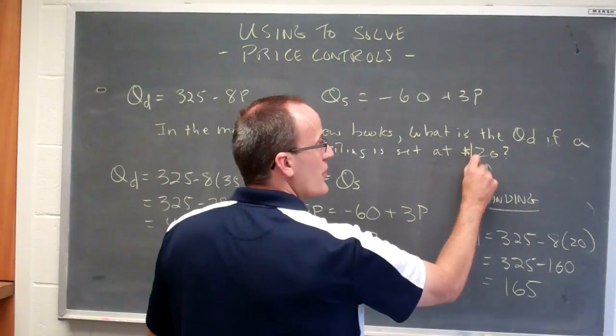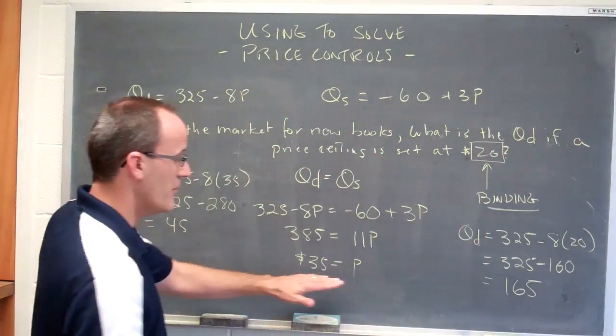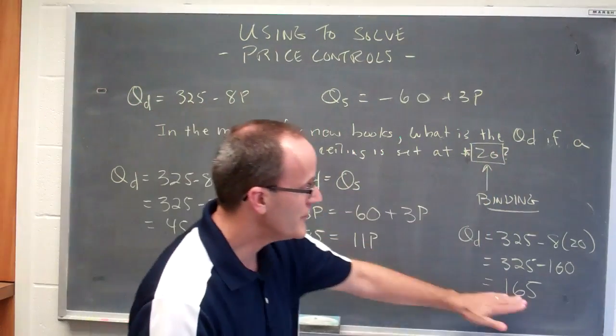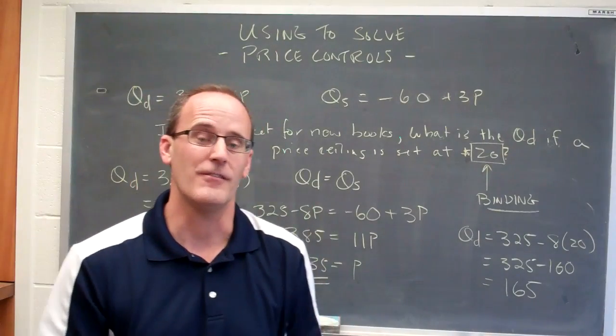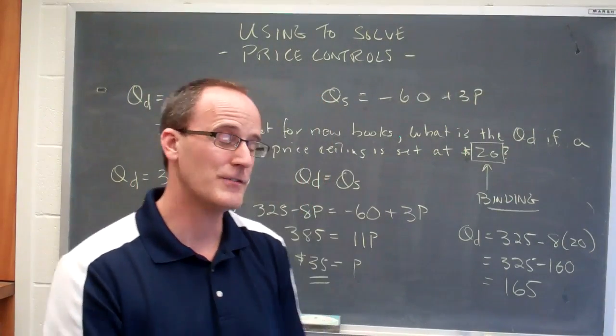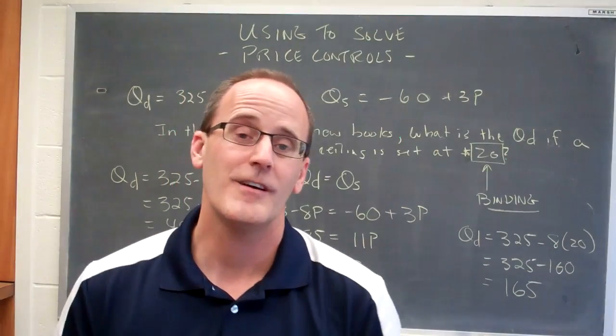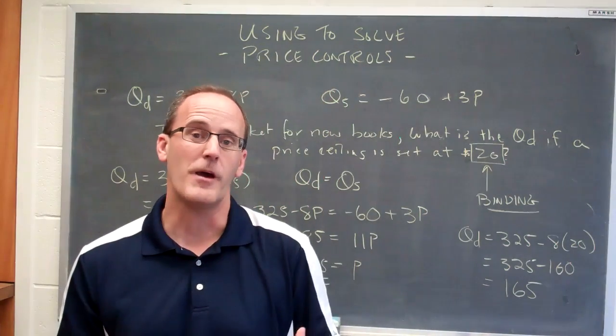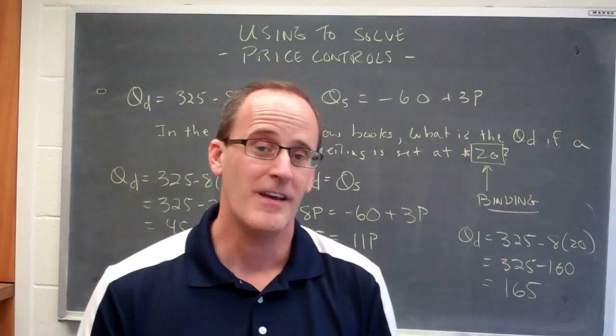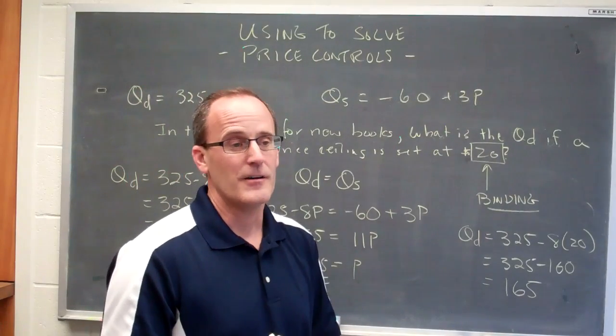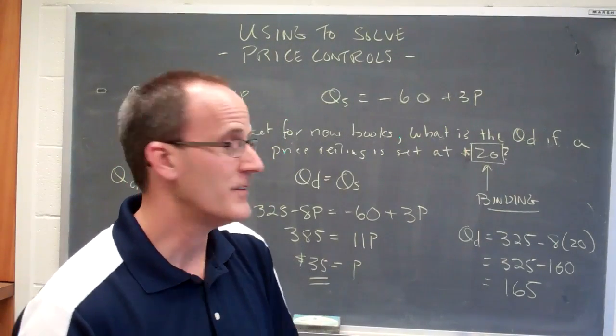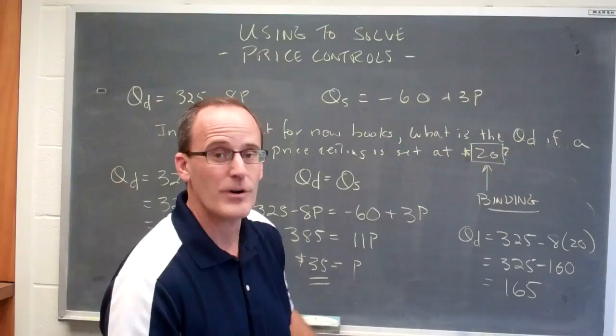But in this case, because the price is set below the market clearing price, consumers want 165 units, which is exactly what you expect. And of course, because consumers want a lot more, and at the same time, producers of hardback books aren't going to make as many, what we would get is a shortage of textbooks at a price of $20.